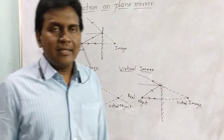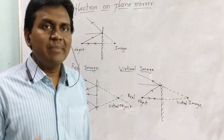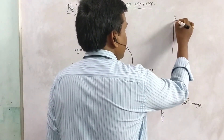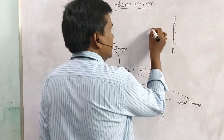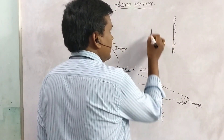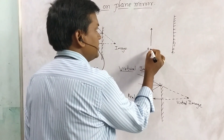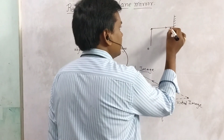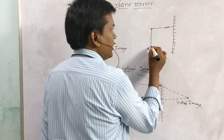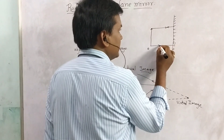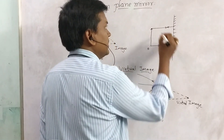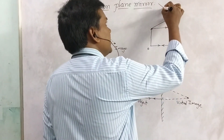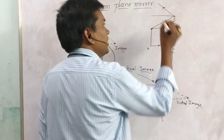Now let us consider some characteristics of an image formed by a plane mirror. Consider a plane mirror with a line object. To trace the image, two rays are sufficient. A ray along the normal will retrace its path. Another ray will make the same angle by the law of reflection.